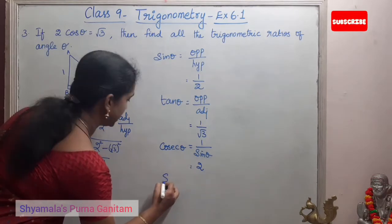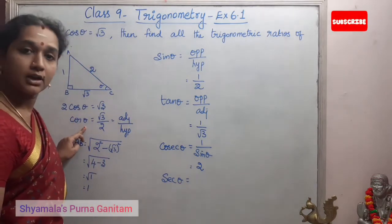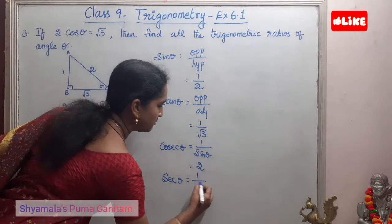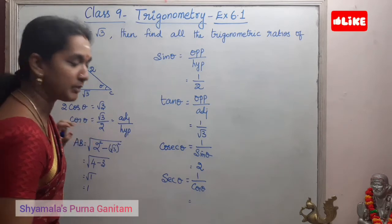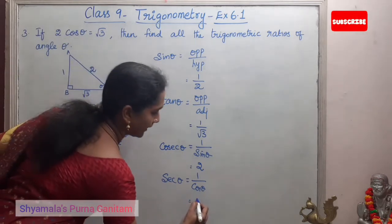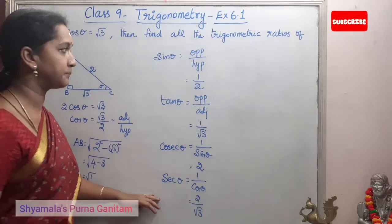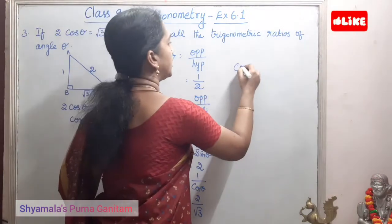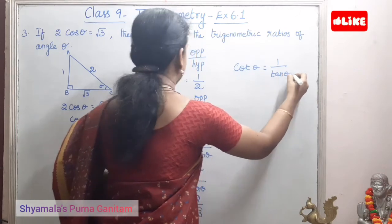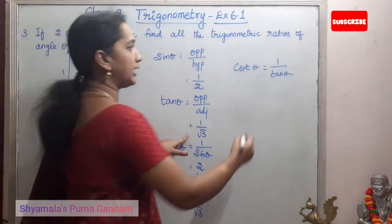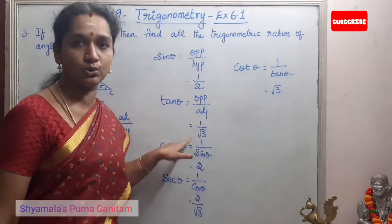Then secθ: secant is the reciprocal of cosθ. Since cosθ = √3/2, secθ = 2/√3. Then the last one, cotθ: cot is the reciprocal of tanθ. Since tanθ = 1/√3, cotθ = √3.